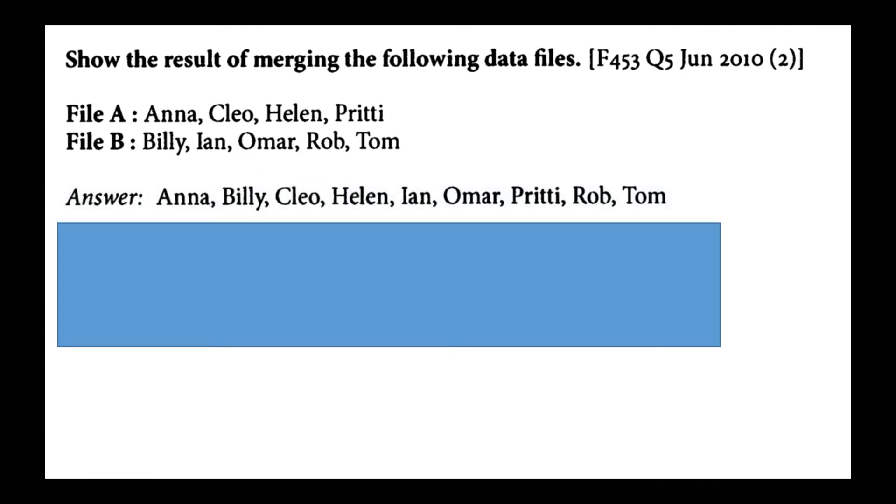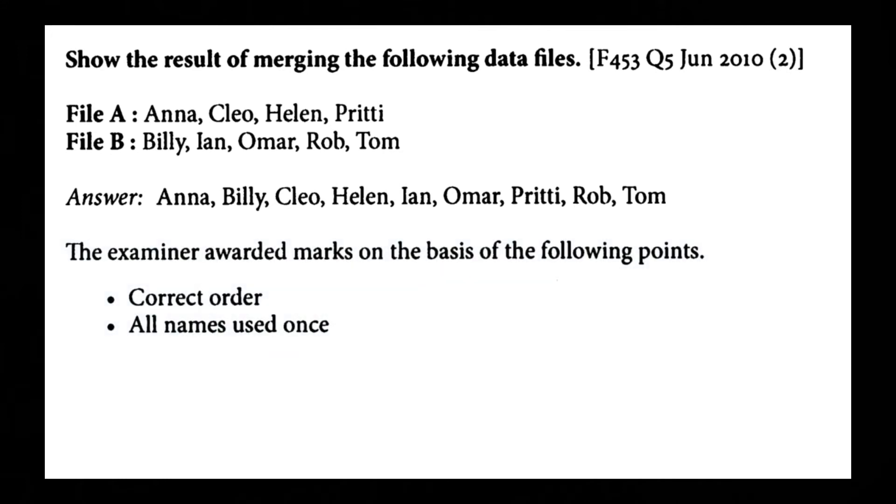So the answer is Anna, Billy, Cleo, Helen, Ian, Omar, Priti, Rob and Tom. And I just noticed this is in the alphabetical order. Although it didn't say. Since it is already in alphabetical order you just merge them. So the examiner will look for the correct order and all names are used once.